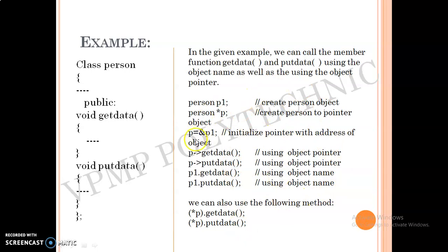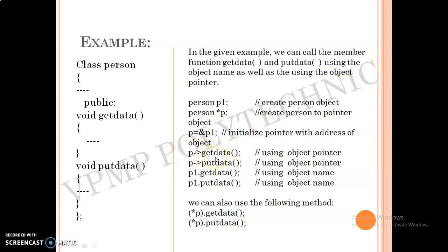Here is an example. This is class Person with two functions. To access class members using a pointer, we use the arrow sign. By using this arrow sign you can access the functions. GetData and PutData are the class members. Using an object pointer, you can access the members inside the class.